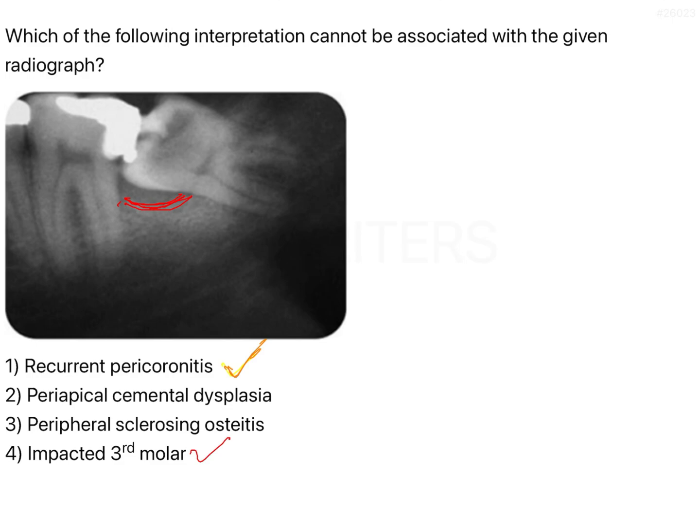This can be a little confusing but there is one easy way to remember: the most frequent location of periapical cemental dysplasia is the mandibular anterior teeth, whereas that of peripheral sclerosing osteitis — also called condensing osteitis — is in the posterior mandibular teeth.